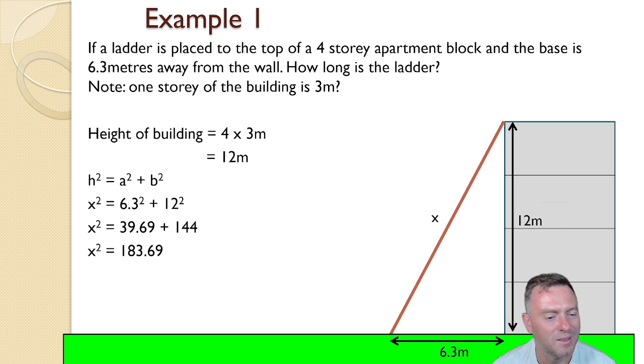Now obviously this is another way to think about this logically. The ladder is not going to be 183.69 meters. So we've got to do the last little step here, which is then to square root that number. And then we get the ladder is going to be 13.55.